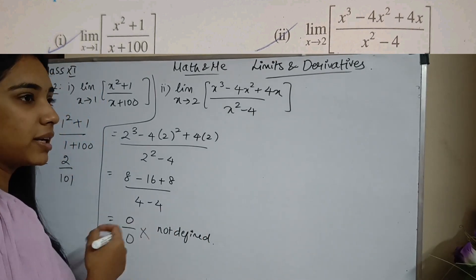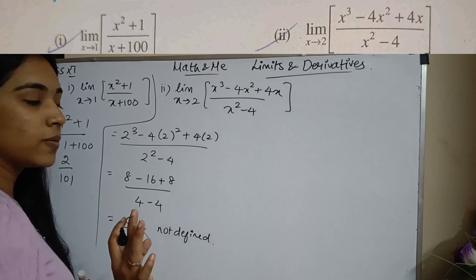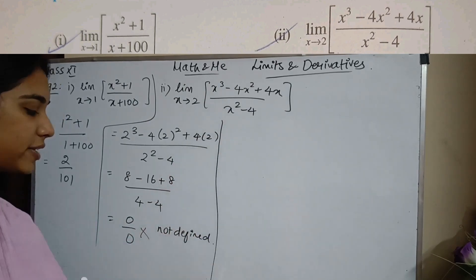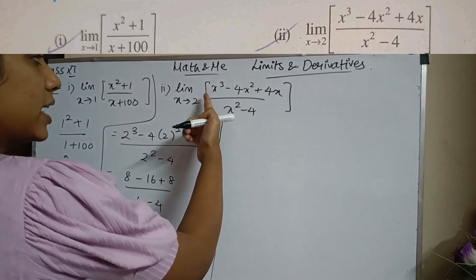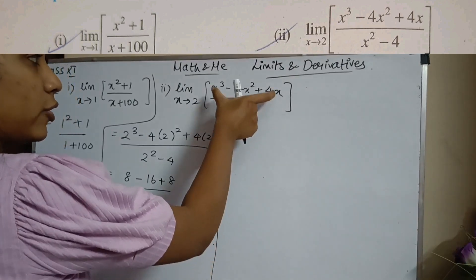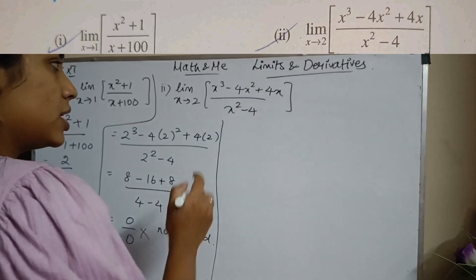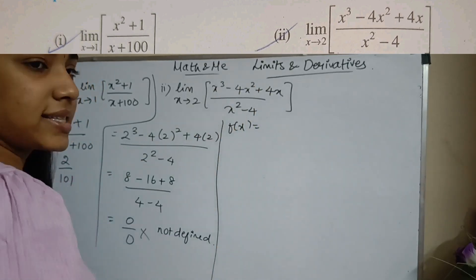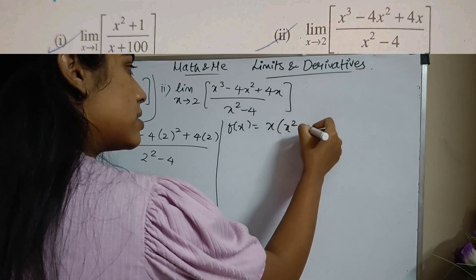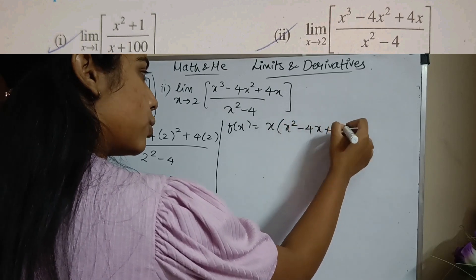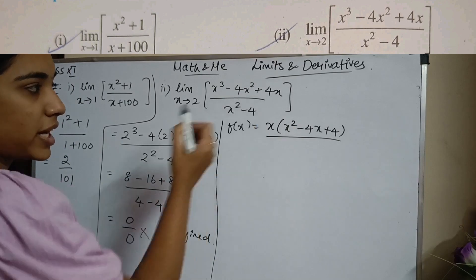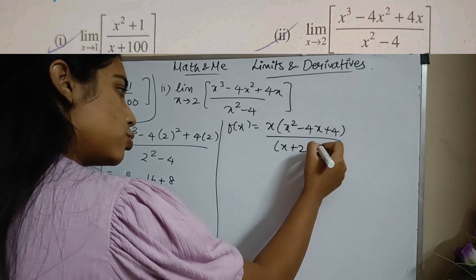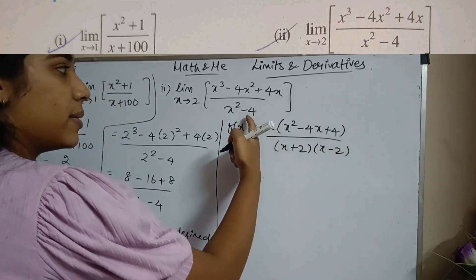In cases like this, we use splitting the middle term. I'm going to split the numerator. Taking x outside the numerator gives x times (x² - 4x + 4). For the denominator, I have a² - b², which can be written as (x + 2)(x - 2), where b² = 4.